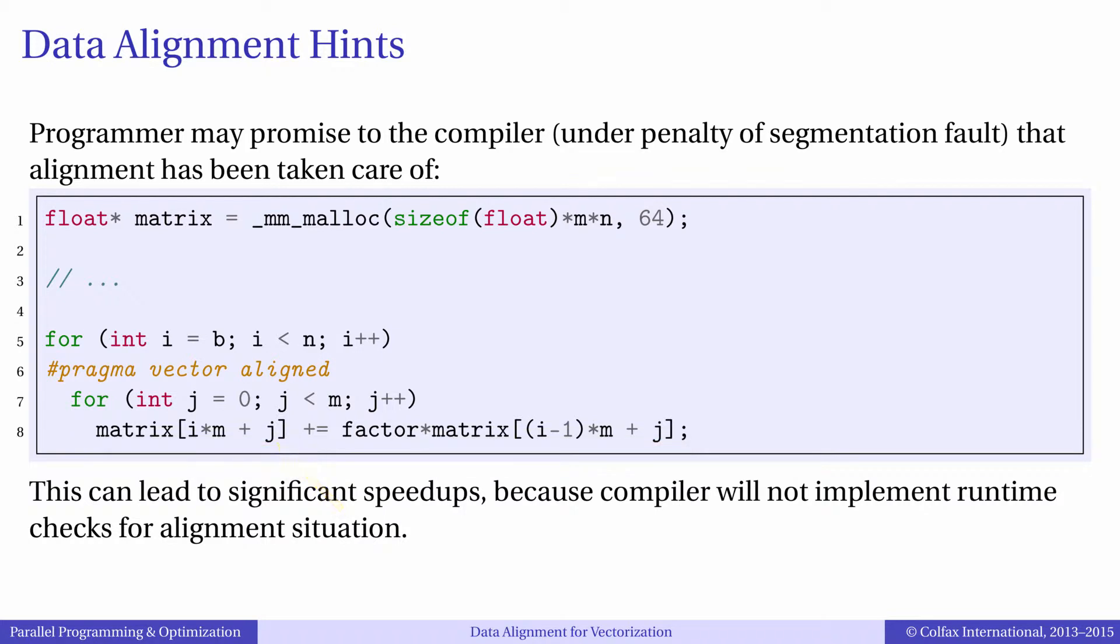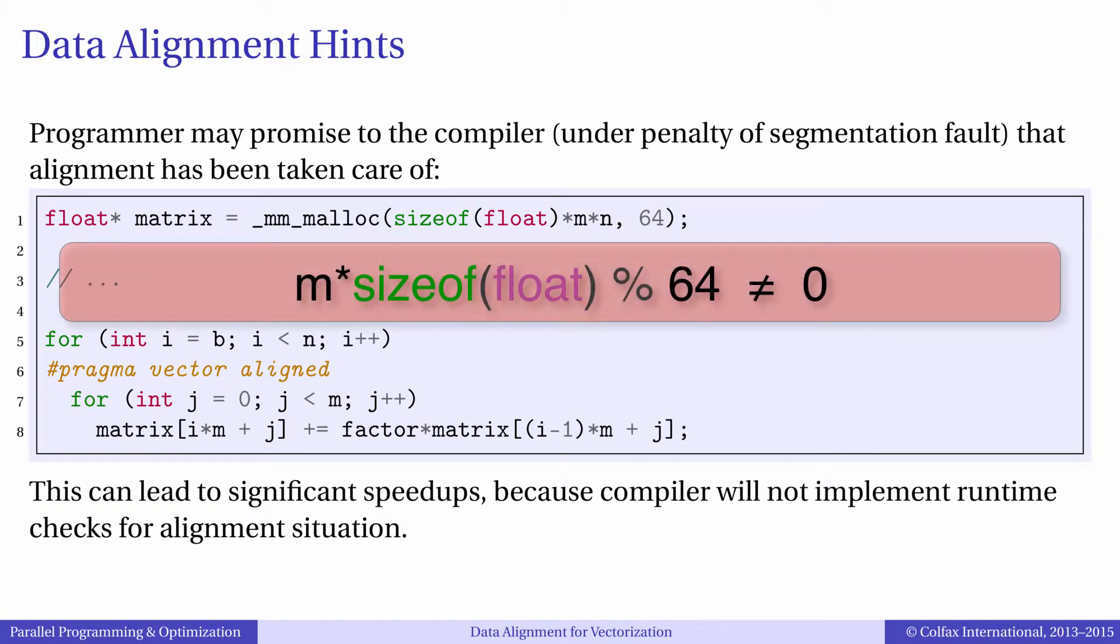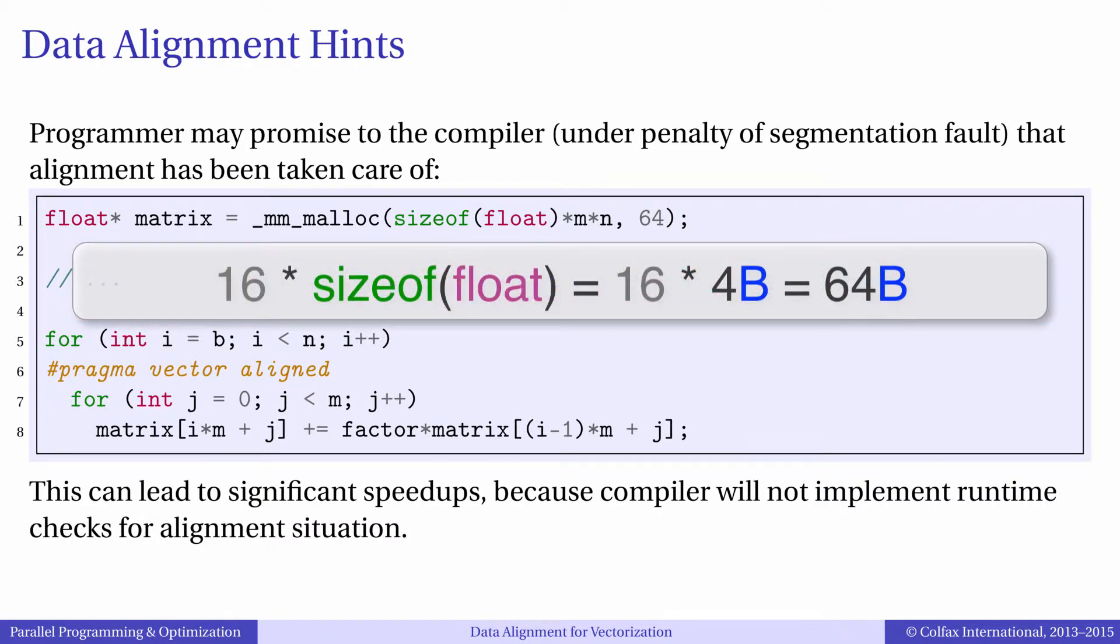We can use mm_malloc to allocate the matrix and it will guarantee that for I equals 0, calculations in the loop begin on a 64 byte aligned boundary. However, what if the length of each row is not a multiple of 64 bytes? 64 bytes holds 16 single precision floating-point elements. So, another way to think of it, what if M is not multiple of 16?